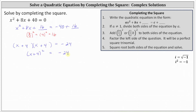Now to solve for x, we'll undo the squaring on the left by taking the square root of both sides of the equation. We also need to include a plus or minus on the right. Notice on the right we have plus or minus the square root of negative 24. This is going to be an imaginary number because the radicand is negative.